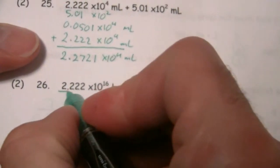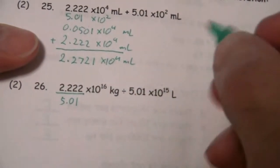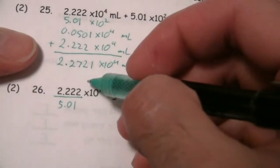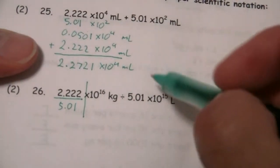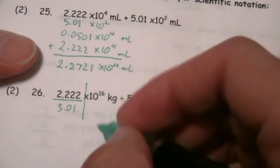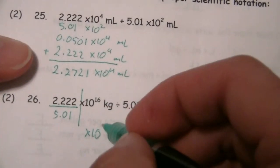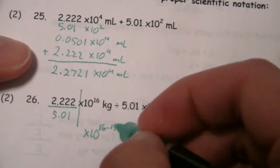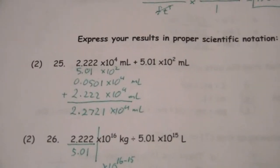So we're just going to do the division part first, and then kind of split this into two parts. And then we're going to say this will be times 10 to the 16 minus 15, which will be, of course, 1.